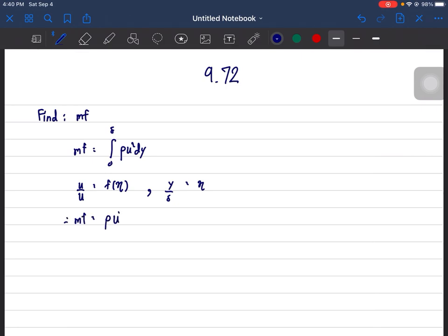So the momentum flux will be rho u square del times the integral from zero to one of f eta square d eta. For the Blasius solution, numerical evaluation of the integration is required.